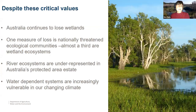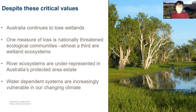But despite these values, we continue to lose our wetlands. One obvious measure of loss is how many ecosystems we're listing as threatened — almost a third of our list of threatened ecological communities are wetlands. We know from our protected area data that our river ecosystems are underrepresented in our protected area estate. And we also know that our wetlands are at the pointy end of climate change — think about the last two decades, marine heat waves that affected the north and western coast, and think about the bushfires and the peatlands over the last couple of years.